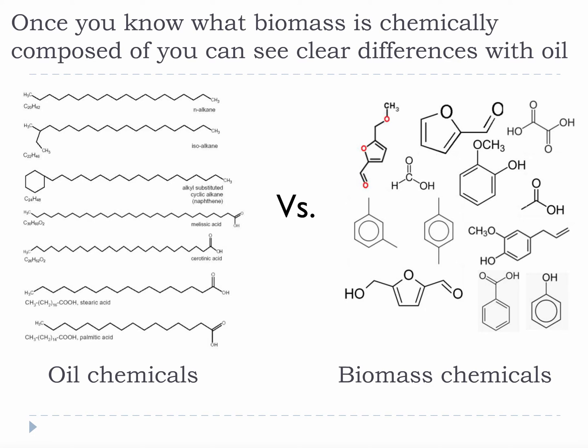Once you know what biomass is chemically composed of, you can see clear differences with oil. What I would like you to take away from this slide is that oil chemistry and biomass chemistry look very different. It is also important that you know that the O's stand for oxygen, the C's stand for carbon, and in the molecule drawings, every location where the lines come together at an angle represents a carbon. If this is confusing, please take a moment to look up chemical structures or chemical drawings on Wikipedia.